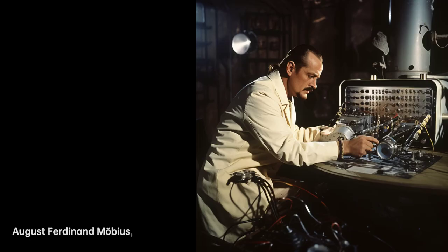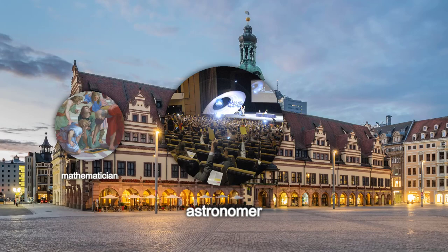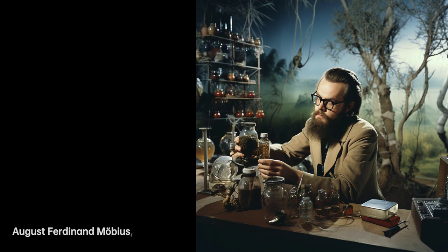Born in Schulpforta, Electorate of Saxony, Möbius was a brilliant mathematician and astronomer whose contributions continue to shape the field to this day. From a young age, Möbius displayed a remarkable aptitude for learning. After being homeschooled, he attended college in Schulpforta before enrolling at the prestigious University of Leipzig.